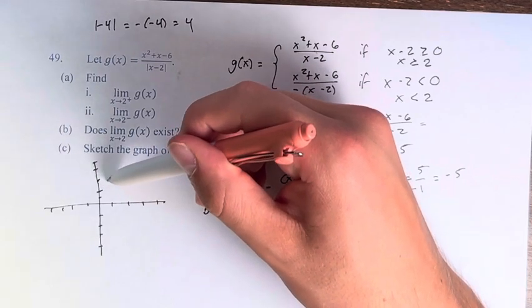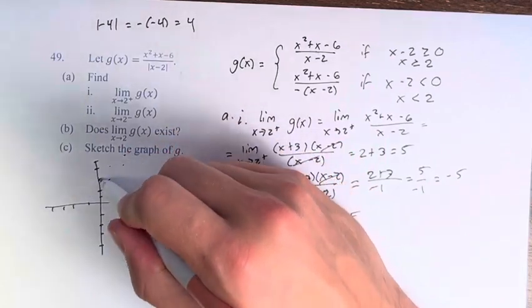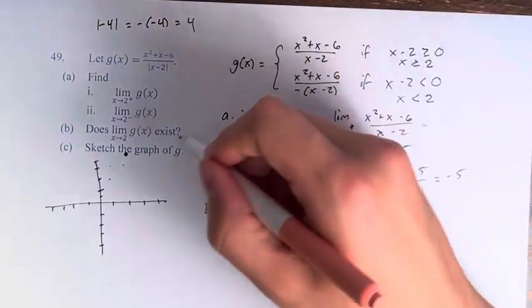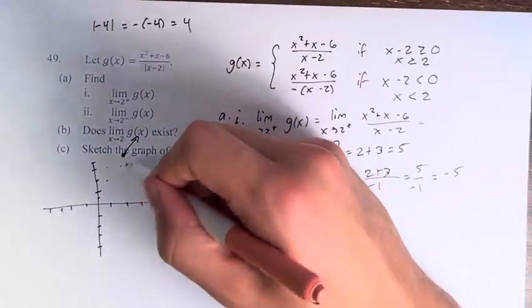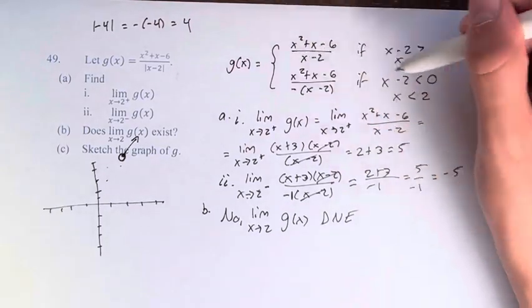So it looks like this, but it actually starts here, and then it goes off in that direction. And I should draw an open circle, because it doesn't equal 2, because you can't divide by 2.